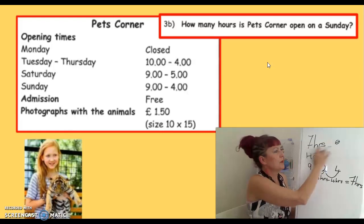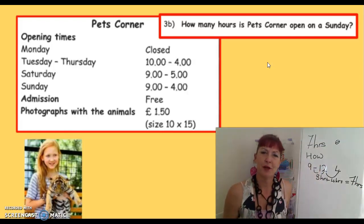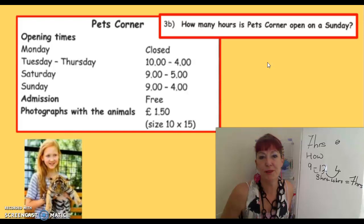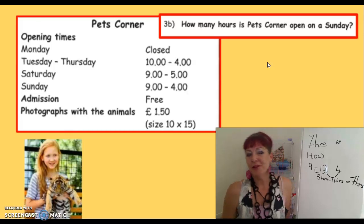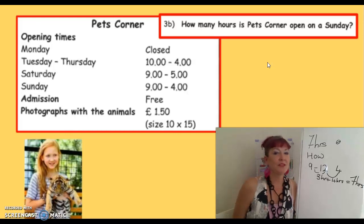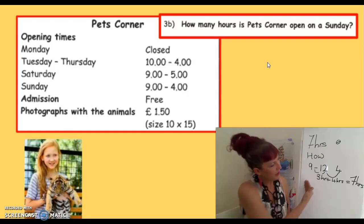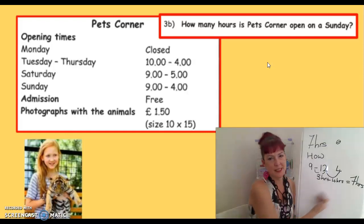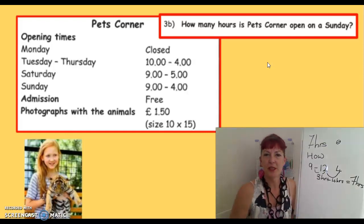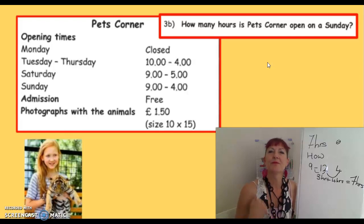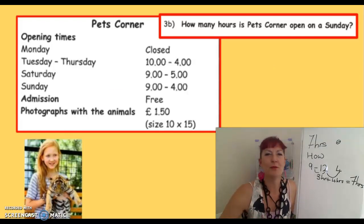If all you do is write down 7, it could be a lucky guess. You could have had a little peep at somebody else's. Here I can see that you have worked it out. If you have another way of doing it, check it with me, because I want you to pass first time.